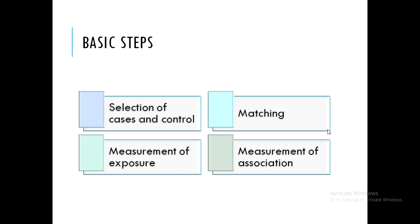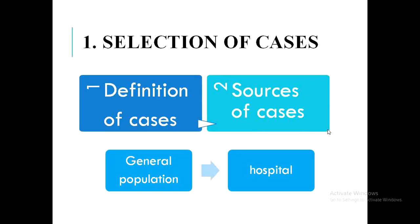The basic steps of conducting a case control study are: first, selection of cases and controls; second, matching cases and controls; third, measuring the exposure rates; and fourth, measurement of association. Let's go through each step one by one.